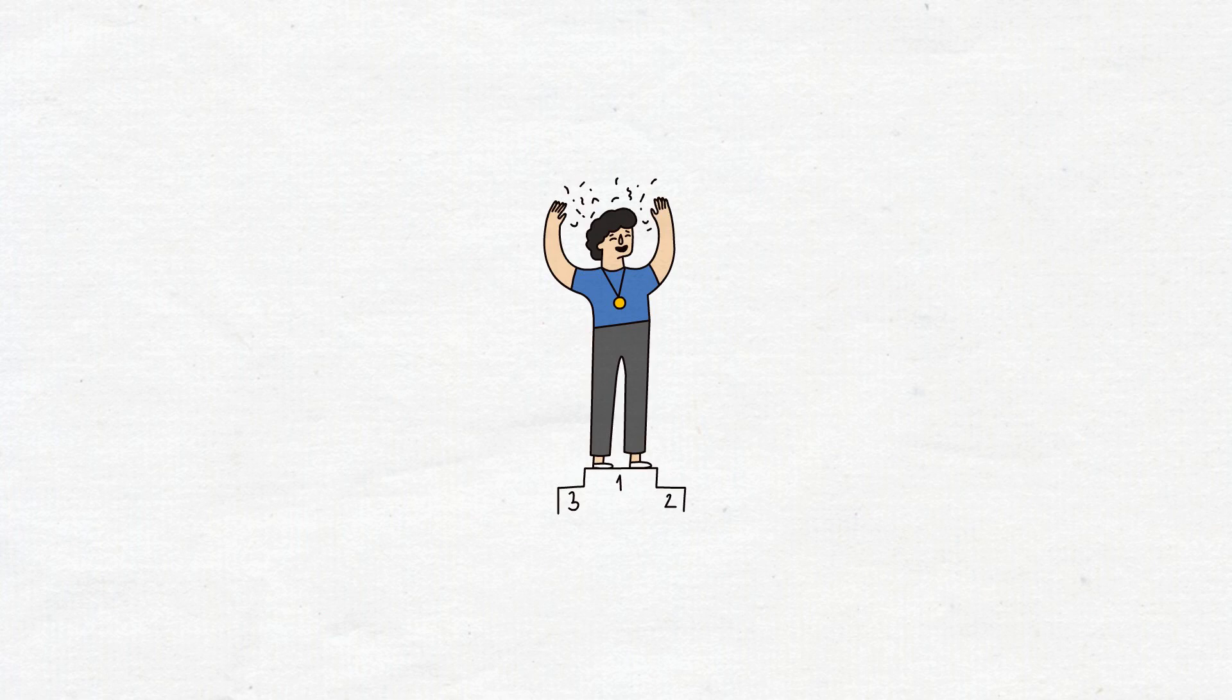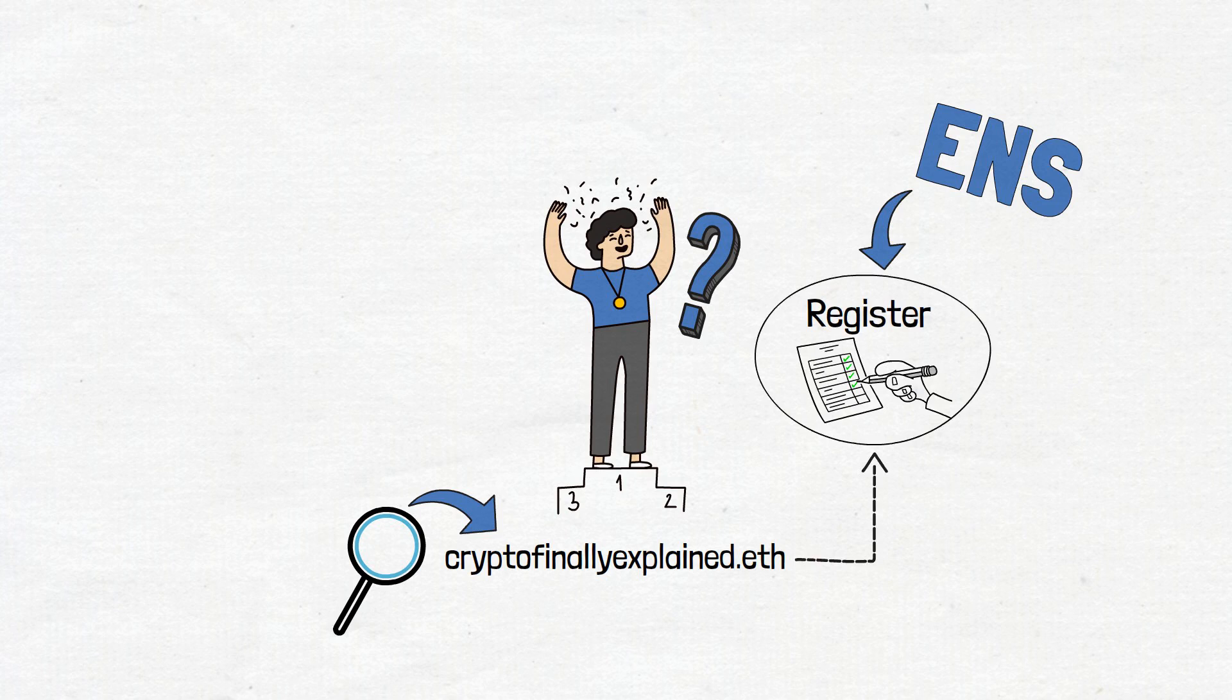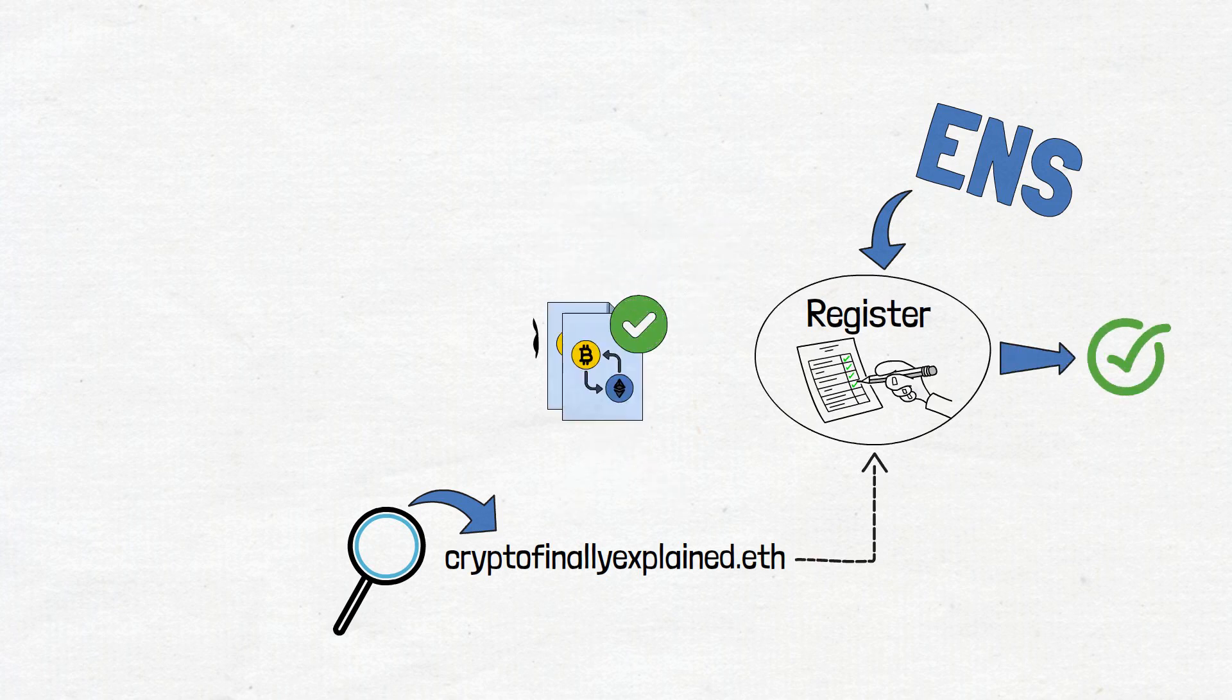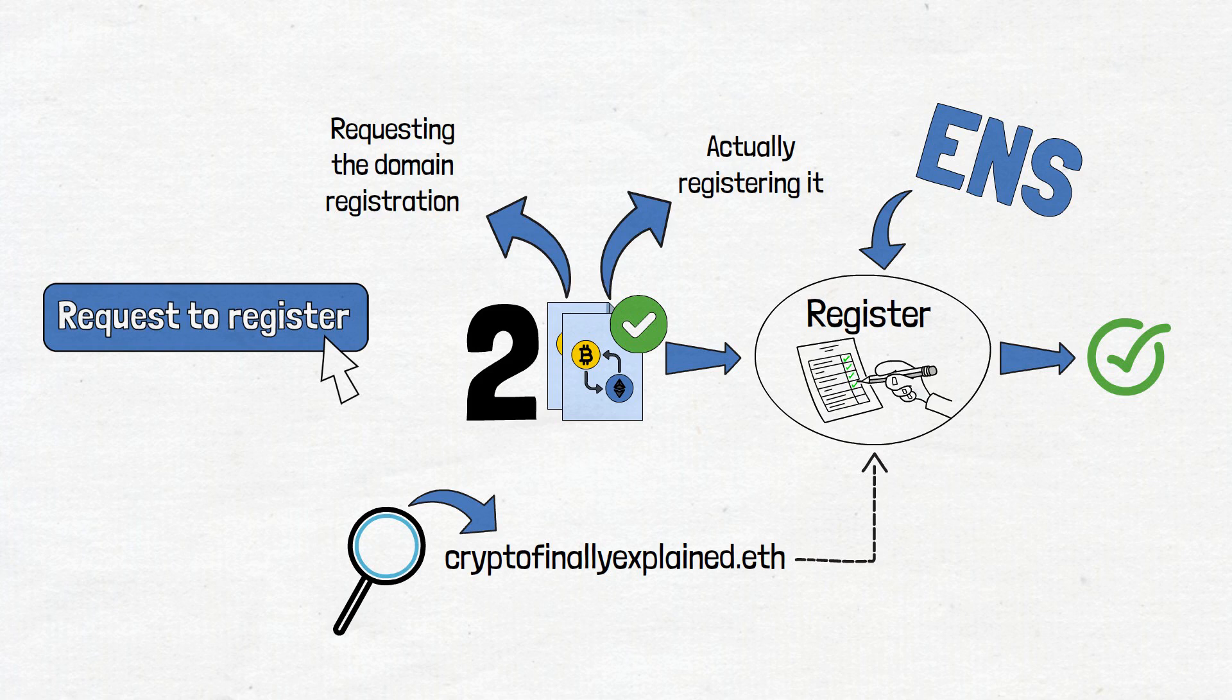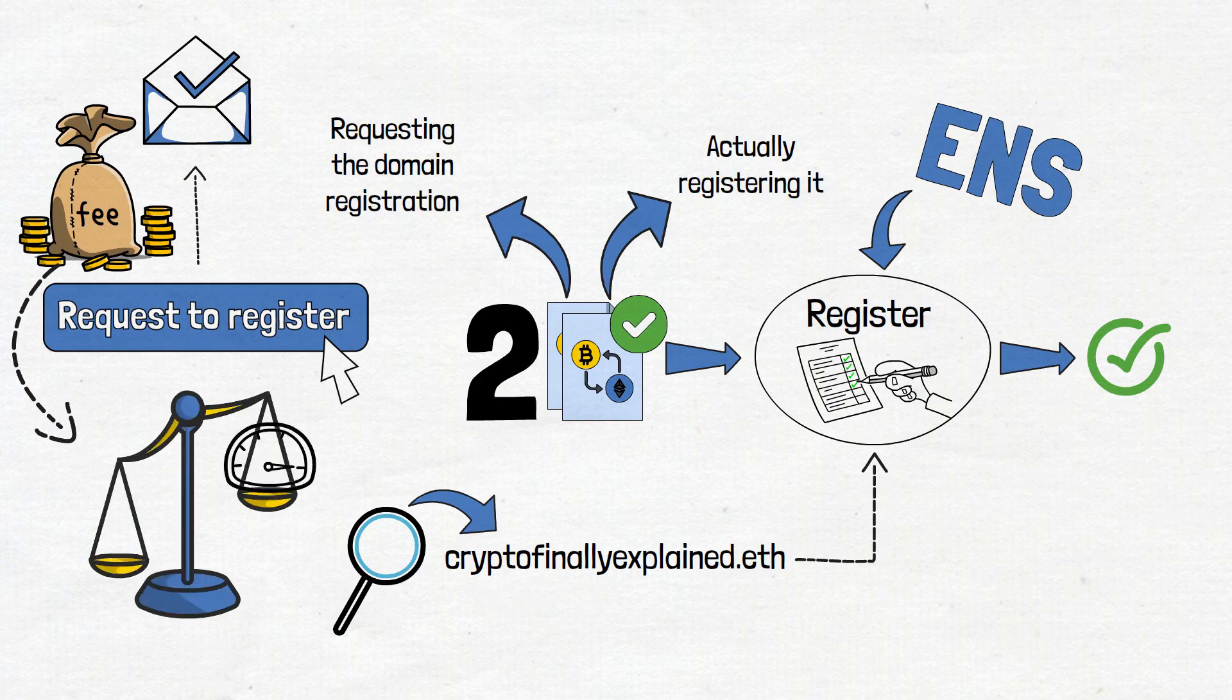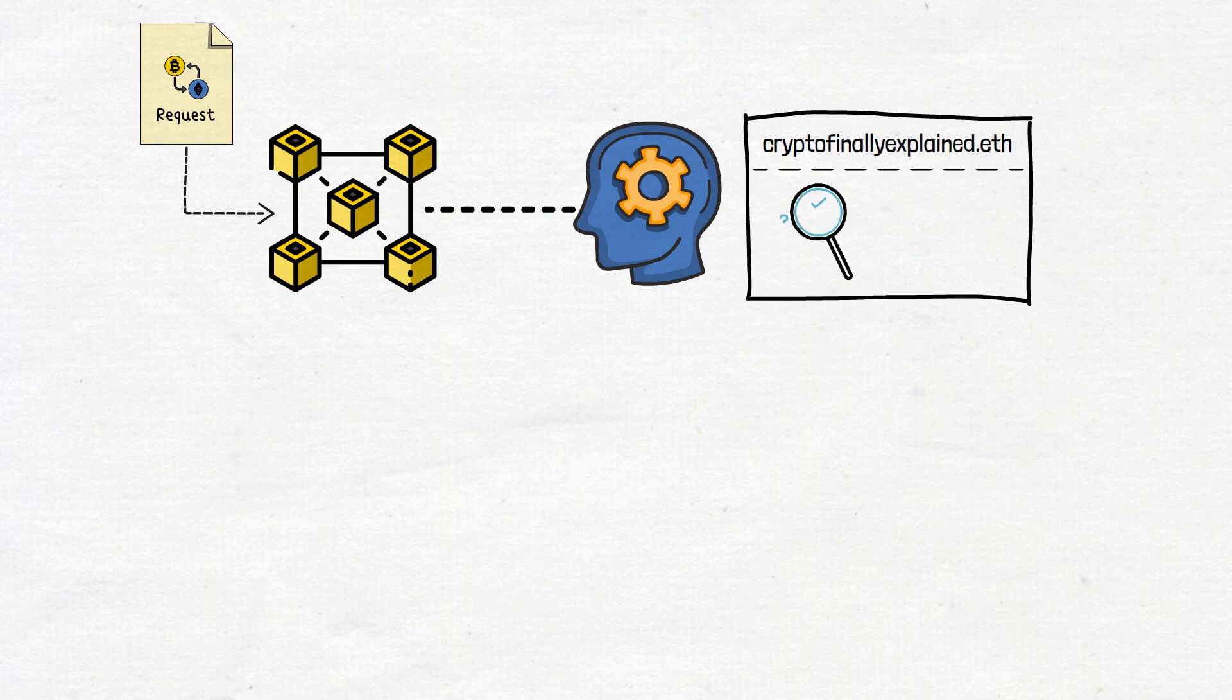Let's say you won the auction for the ENS domain CryptoFinallyExplained.eth, what's next? Before you start exploring what to do with your ENS domain, you must register it. Let's look into how to use the ENS domain application to do exactly that. To finish this procedure, you will have to complete two transactions, requesting the domain registration and actually registering it. Once you click the request to register button, you will have to pay a small network fee for the request to go through. The price of the network fee greatly depends on how fast you want it to go through. The more money you are willing to spend, the faster your request will be processed. After the request transaction appears on the blockchain, the system will check if no one else attempted to register the domain name during the same time frame. If everything goes well, you can proceed to the last step.